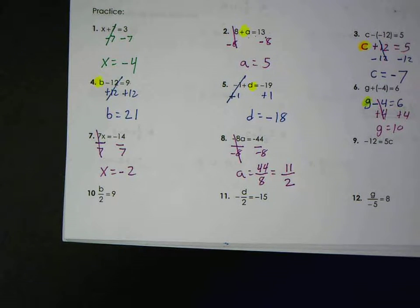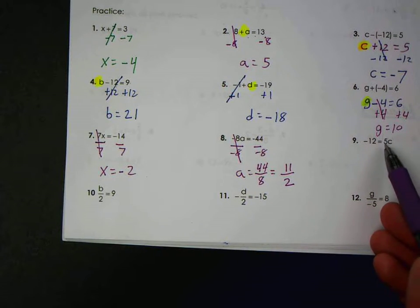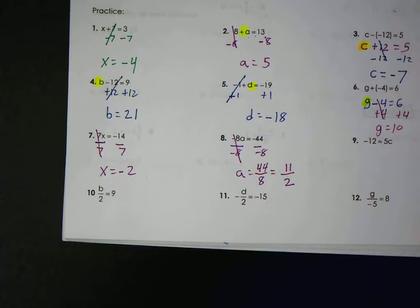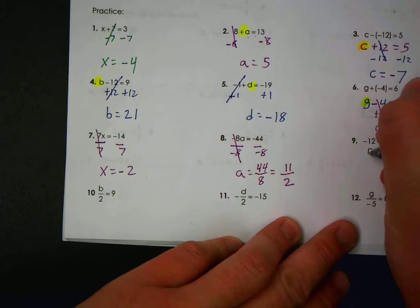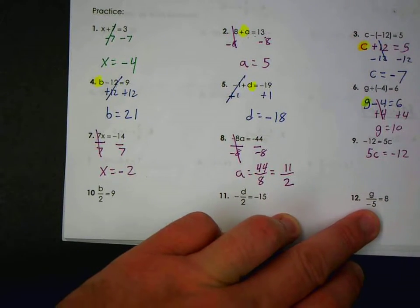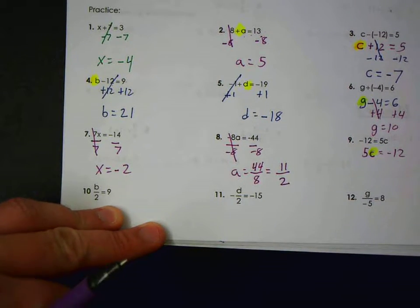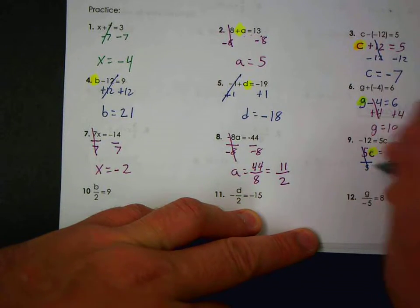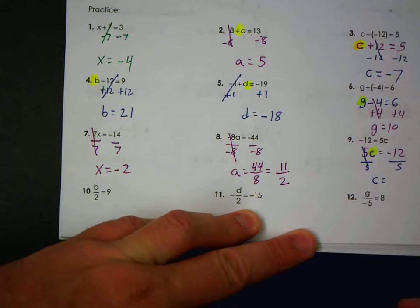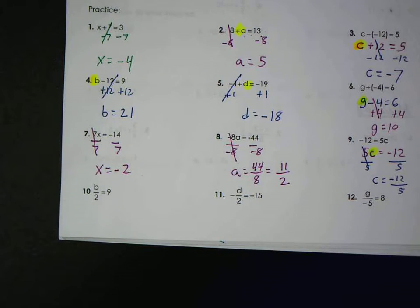Number nine. Everything to this point, the variable has been on the left side. Sometimes the variable is on the right, sometimes the variable is on both sides. You have, anytime you want, you can take everything and just flip it around. So if you like this better, that is an allowable property of math. You can just flip the whole thing around. Maybe that makes more sense. Five times what is negative twelve? Divide by five. And in this case, five and twelve will not reduce.